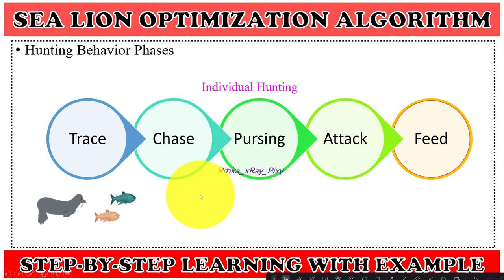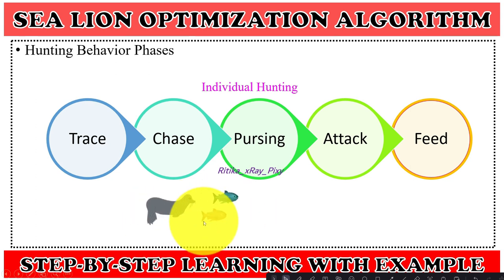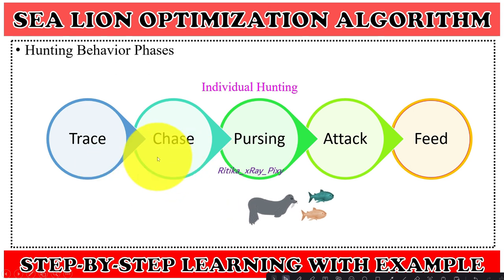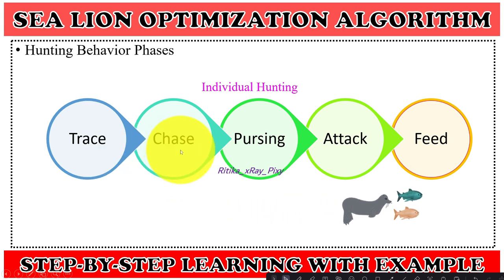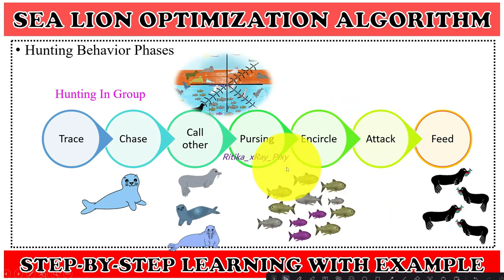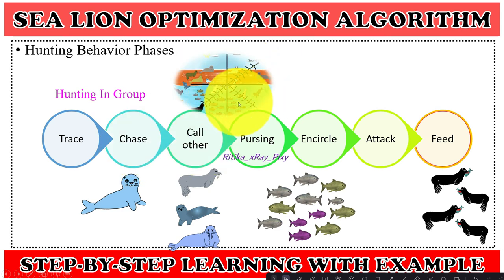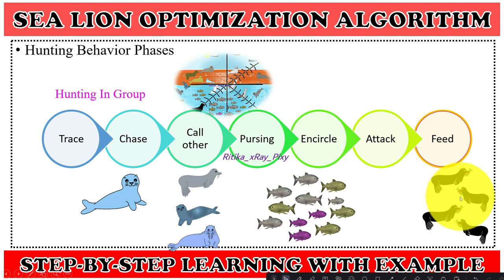Here are the different steps sea lions perform during hunting. In individual hunting, a sea lion traces the target, then starts chasing, and after pursuing, attacks and feeds. In group hunting, when a sea lion traces plenty of food, it starts chasing and calls other members to join. When other sea lions join the hunt, they encircle and attack the target, then feed.